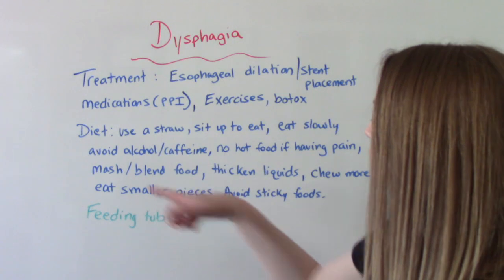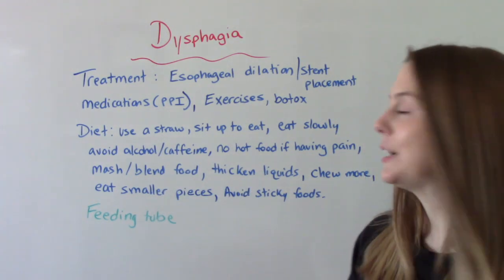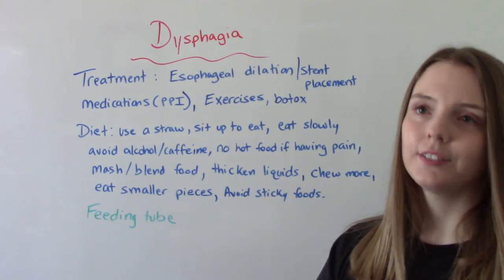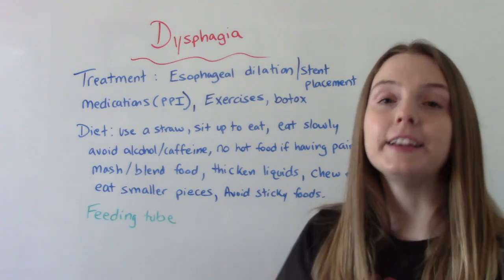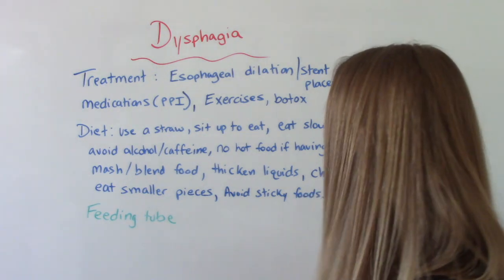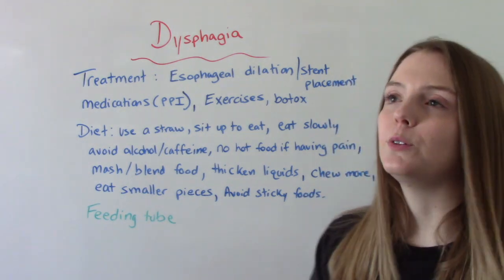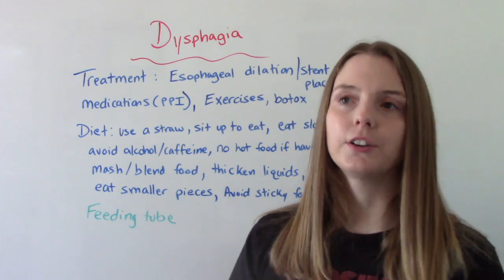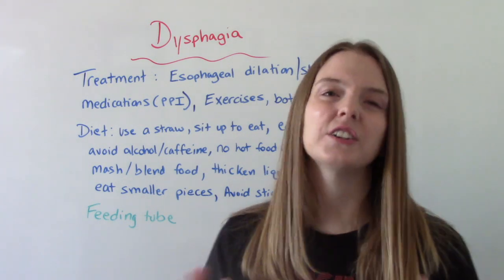Mash or blend your food. Thicken your liquids. Chew more, eat slower, and use smaller pieces. And avoid sticky foods, things like peanut butter and caramel — stuff like that is harder to eat.